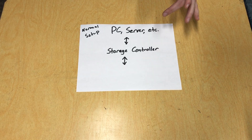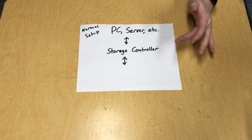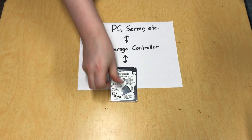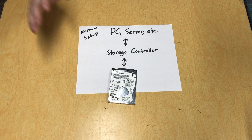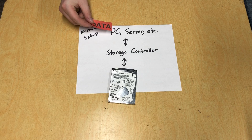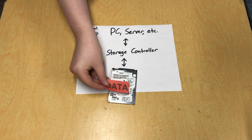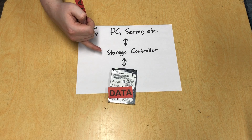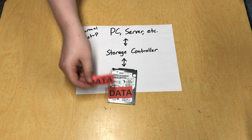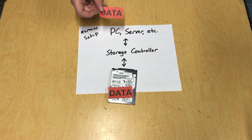Now a normal setup has your PC or your server or whatever, which is hooked up to a storage controller, and that storage controller is connected to one storage medium. In this case it's a hard drive, but it could be a USB external drive or a flash drive or something like that. The computer will have some data that it wants to store, so it'll pass it to the storage controller which will write it to the hard drive. And if it wants to read that data, it'll communicate with the storage controller which will read the data from the drive and pass it back to the computer.